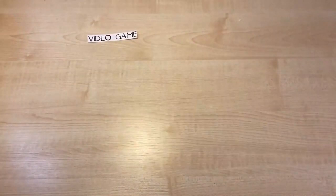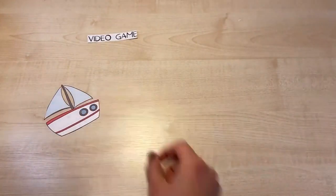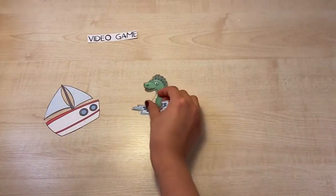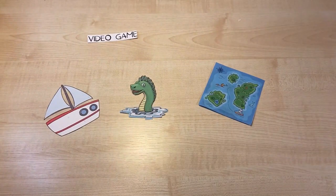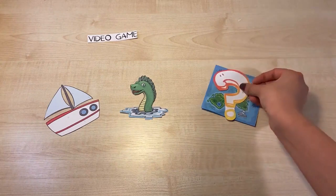The video game required players to navigate a boat in search of sea creatures. Before beginning the game, players were presented with a map depicting the start location along with several checkpoints that they had to find in a specific order.